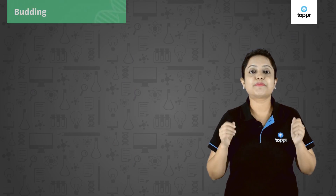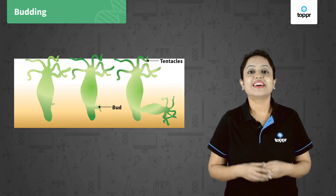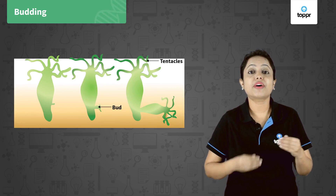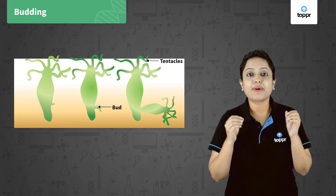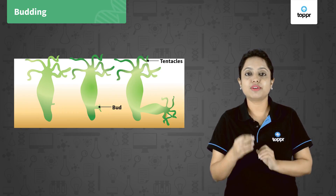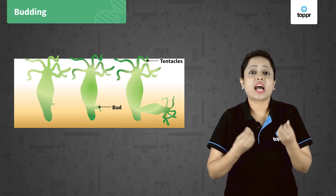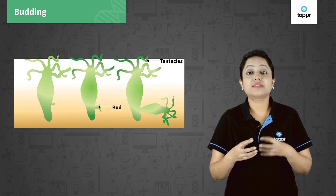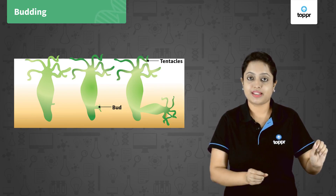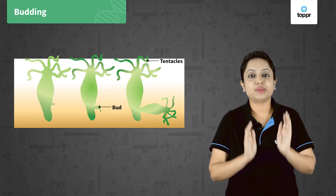The next method is budding. It is also present in hydra. Regenerative cells in hydra are responsible for budding. This budding is the result of repeated cell division at a particular site — it is nothing but just an outgrowth. When this bud matures, it detaches from the body of the parent and then grows as a new individual.